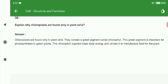These plastids have chlorophyll. They trap the solar energy which can be utilized in the manufacturing of food for the plants. That's why chloroplasts are only found in plant cells.